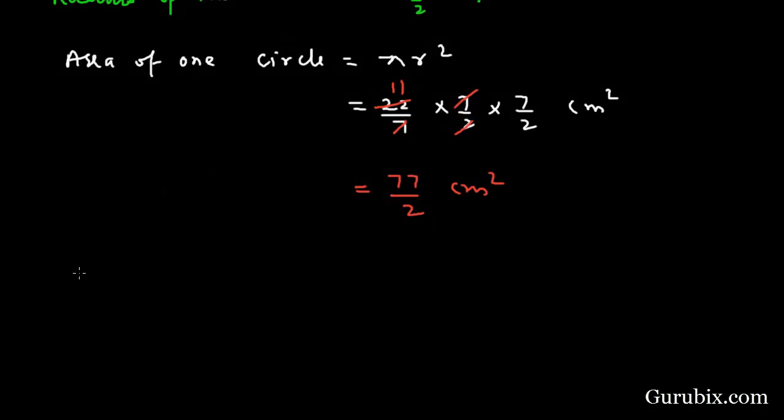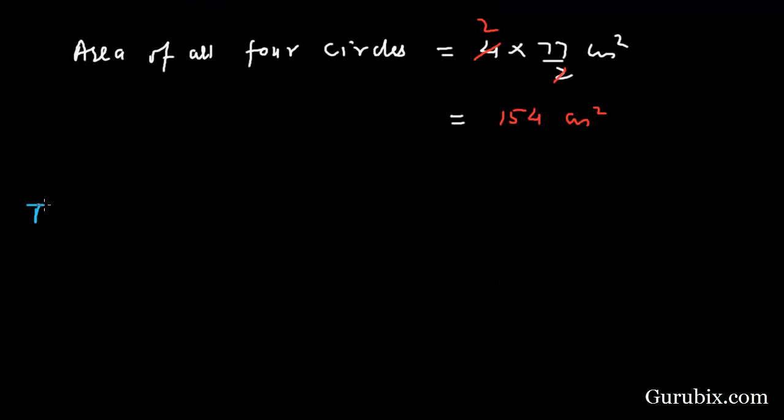Now we can easily find out the area of all four circles. We shall multiply 4 with 77 over 2 centimeters squared. We can cancel out 2 with 4 to get 154 centimeters squared.